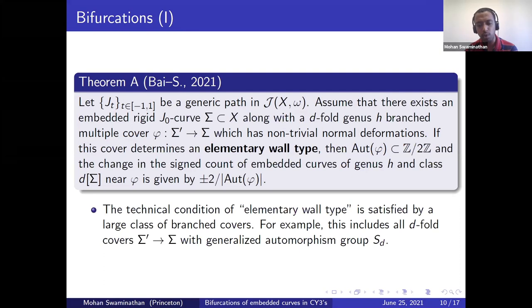The technical condition of elementary wall type is currently needed for our proof and it is satisfied by a large class of branch covers. As an example, this includes all default covers Σ' to Σ which have a Galois group equal to S_d, the entire permutation group. To get even more concrete, this includes all default covers of P^1 to P^1 which have the expected distinct number of branch points, 2d minus 2.